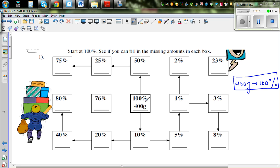From 100% to 50%, you want to find 50%. I hope you know 50% is half of anything. 50% as a fraction is half. So half of 400 is 200.